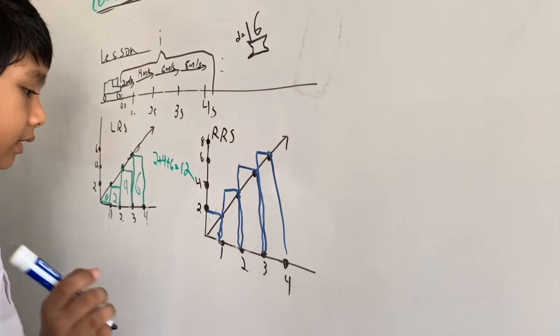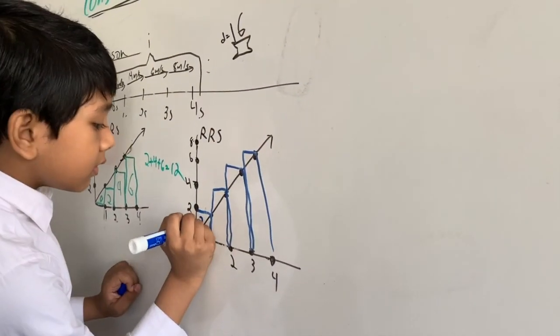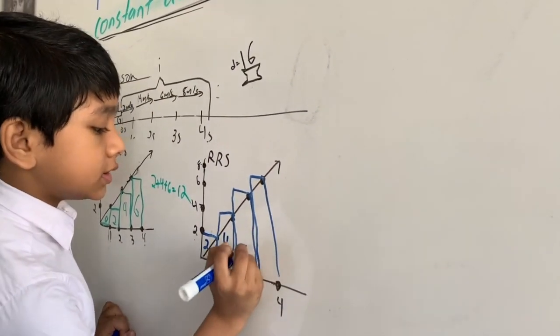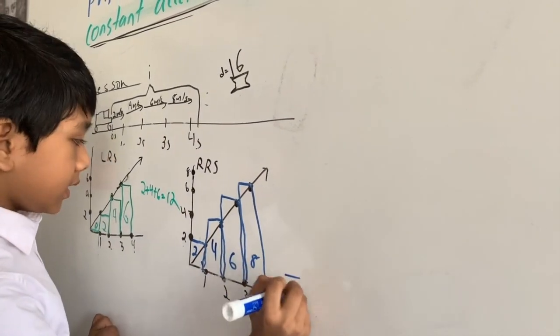So let's put this. This has an area of 2, 4, 6, 8. That's 20.